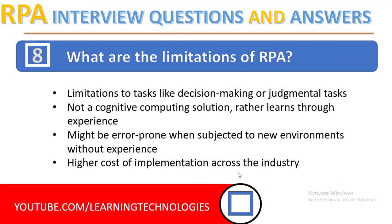Next question: what are the limitations of RPA? There are a few limitations. First, limitations to tasks like decision-making or judgmental tasks. Second, it is not a cognitive computing solution — rather, it learns through experience. Third, it might be error-prone when subjected to a new environment without experience. Fourth, higher cost of implementation across the industry. These are the limitations of RPA.